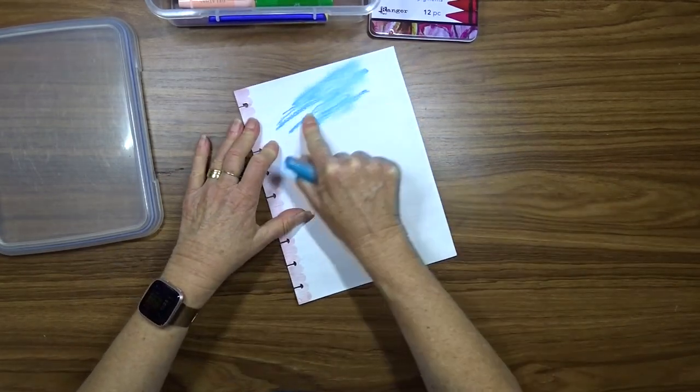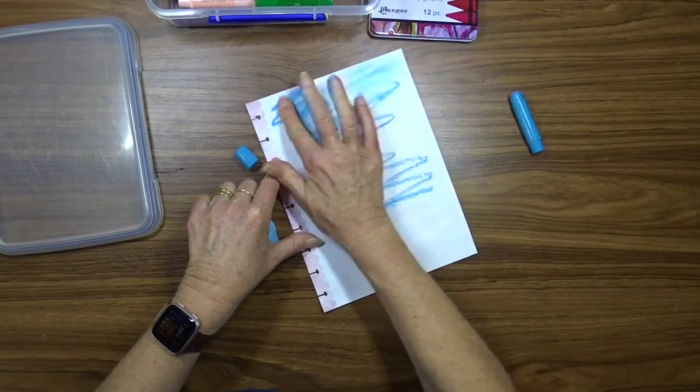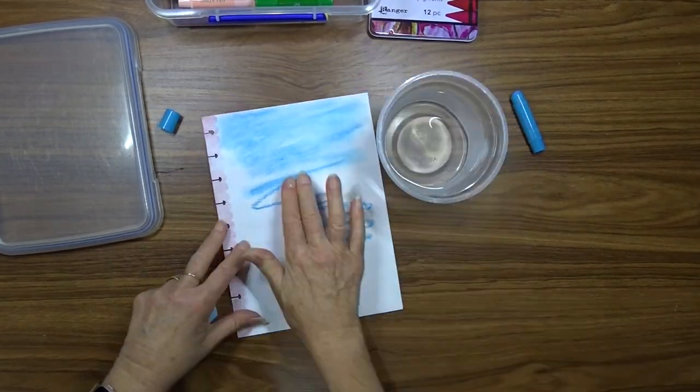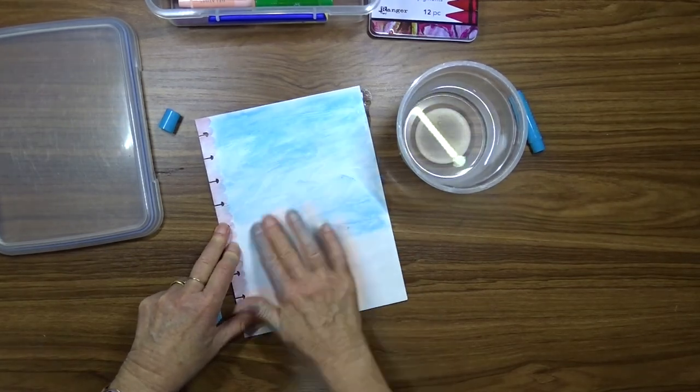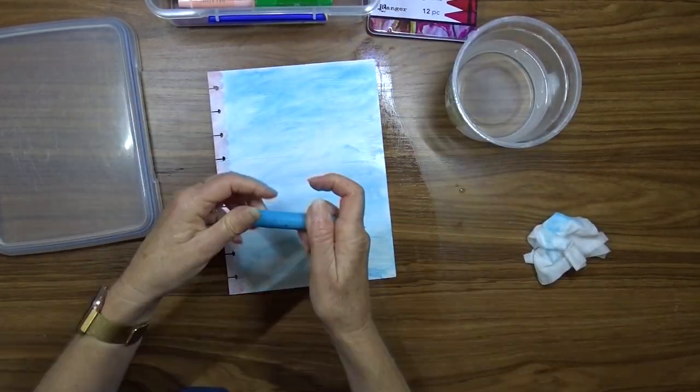So I get out my gelatos and I choose some blues and some greens to start with my background. I use an assortment of both colors and I use my finger that I dip into some water to blend the colors together.